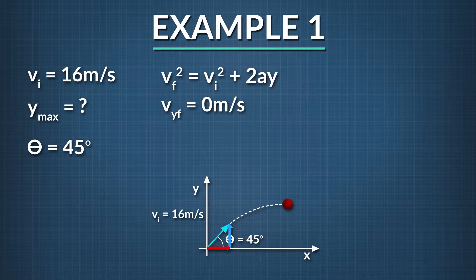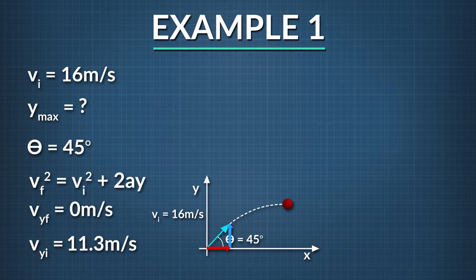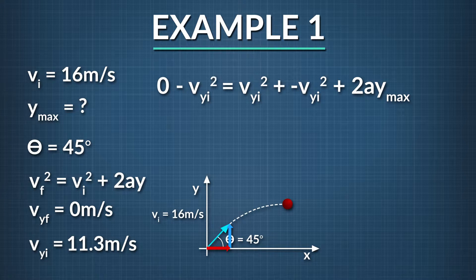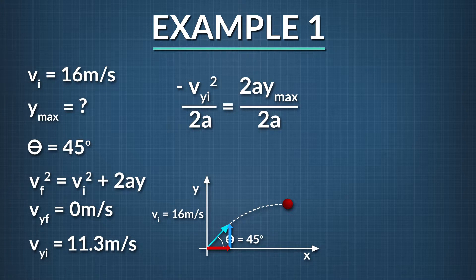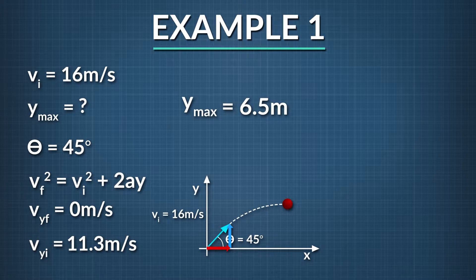The final vertical velocity of the ball when it's at its highest point is zero. The initial velocity of the ball in the y-direction, v sub yi, equals the initial velocity of the ball times the sine of the angle at launch. We find this by taking 16 meters per second times the sine of 45 degrees, which makes our initial velocity in the y-direction 11.3 meters per second. Now we arrange our kinematic equation to solve for y sub max. We know our final velocity in the y-direction is equal to zero, so we make that term zero. Subtracting v sub yi squared and dividing both sides by 2a leaves us with y sub max equal to negative the initial velocity in the y-direction squared, divided by 2 times the acceleration due to gravity. Plugging our known values into the equation, we find that the maximum height the ball reaches is 6.5 meters.